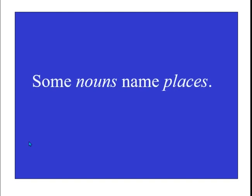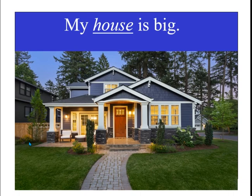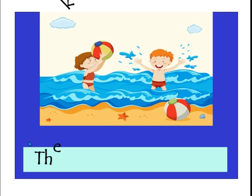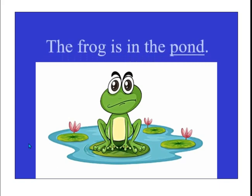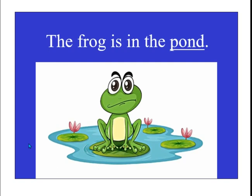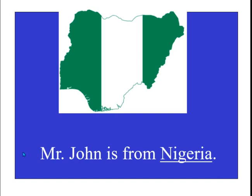Some nouns name places. 'My house is big' — house is the noun that names a place. 'The kids play in the pool' — pool is a noun that shows a place. 'The frog is in the pond' — the pond is a place. 'Sam writes at home' — home is the place. 'Mr. John is from Nigeria' — Nigeria is a place.